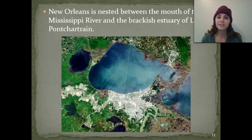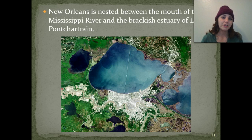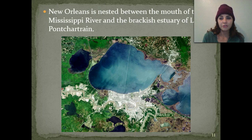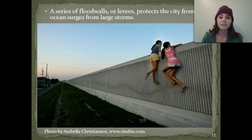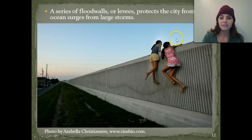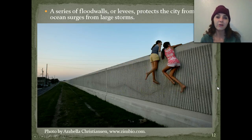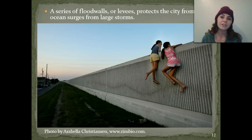This is the case study we're going to be discussing when talking about aquatic ecosystems. Most of you are familiar with the city of New Orleans — it's nested between the mouth of the Mississippi River and the brackish estuary lake of Lake Pontchartrain. There's a series of flood walls called levees that protect the city from ocean surges during large storms.